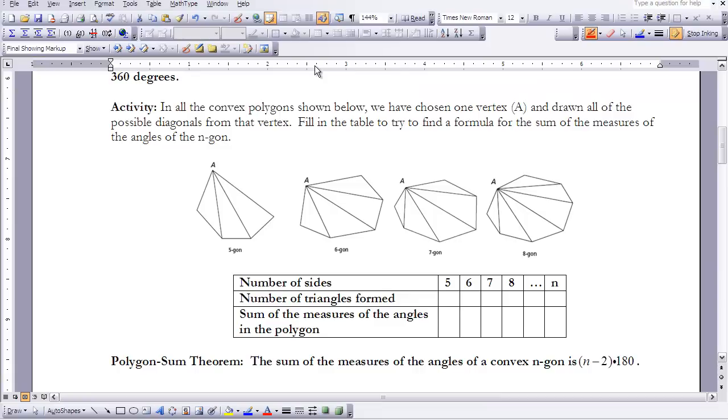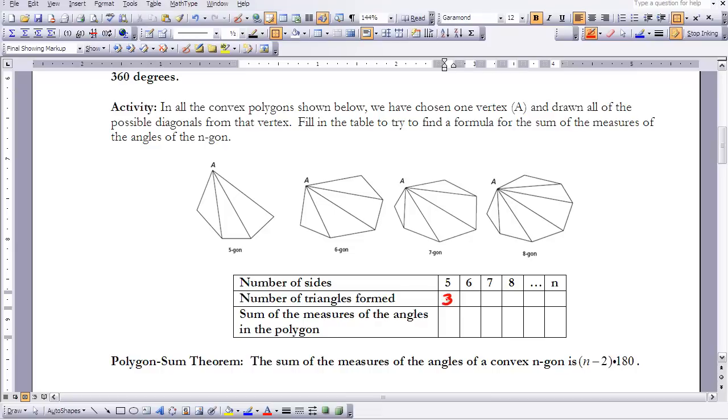We're going to do this next activity. In all the convex polygons shown below, we have chosen one vertex A and drawn all of the possible diagonals from that vertex. I want you to fill in the table to try and find a formula for the sum of the measures of the angles of an n-gon. I'll start and do the first one with you. We know that in a 5-gon, we've got 3 triangles, so to find the sum of the measures of the angles, we would go 3 times 180 equals 540.